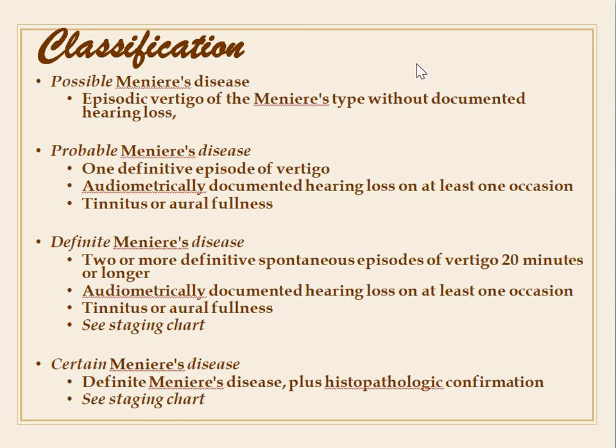Meniere's disease is classified as possible, probable, or definitive. Possible Meniere's disease is episodic vertigo of Meniere's type without documented hearing loss. Probable Meniere's disease involves one definite episode of vertigo with audiometrically documented hearing loss on at least one occasion and tinnitus or aural fullness.